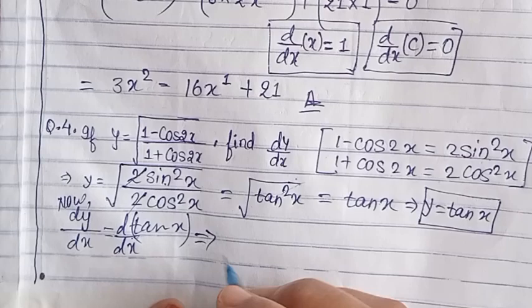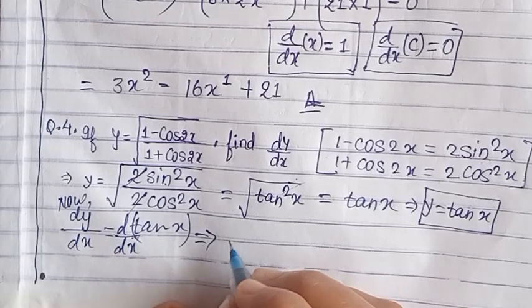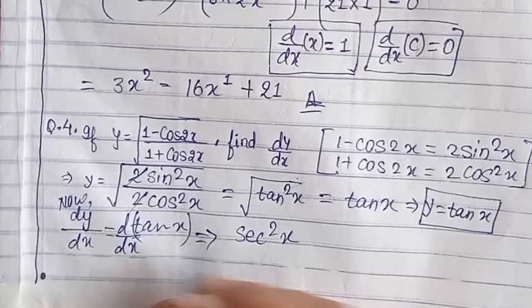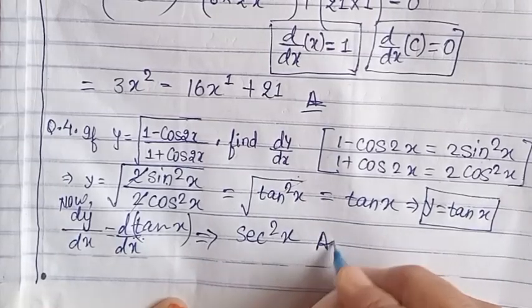So here what do you get? Tan x. So now differentiate. What do you get? Tan x, it was the formula. So what do you get? Tan x is equal to sec squared x. This answer is now.